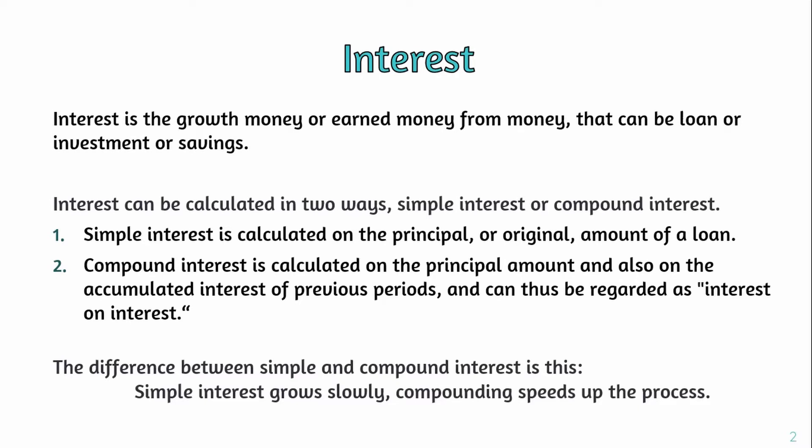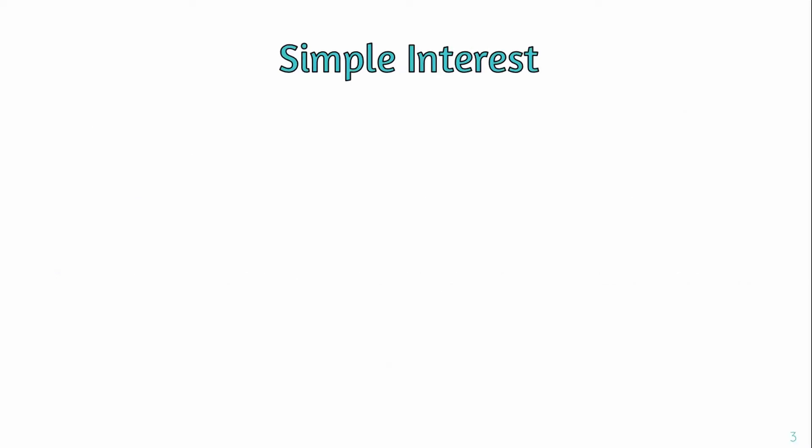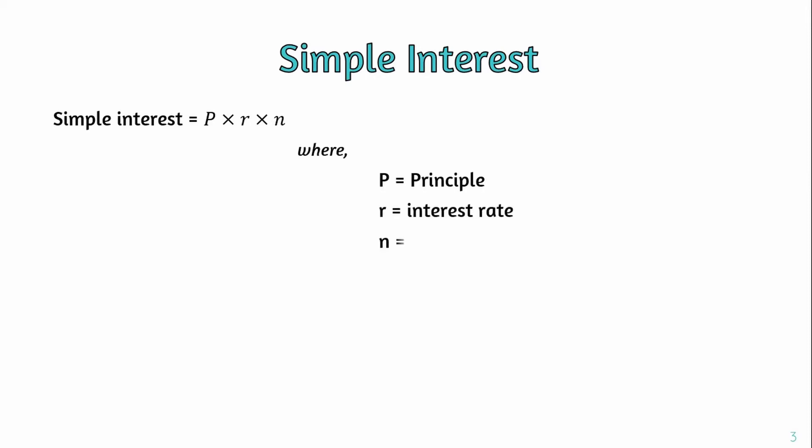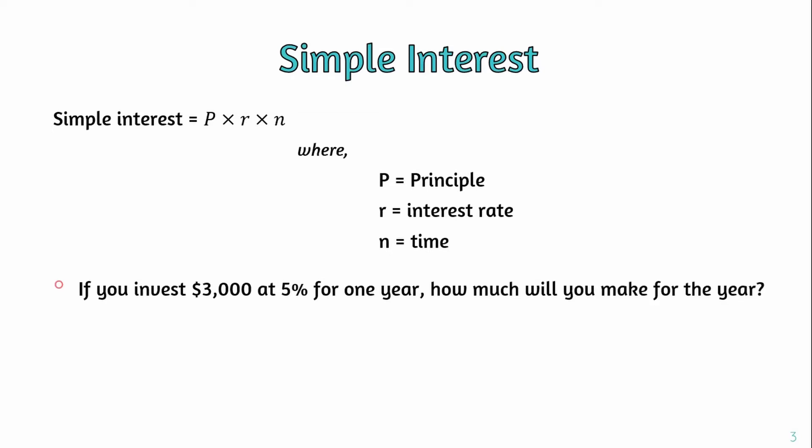So first, we will look at the simple interest formula. The simple interest formula is P times R times N, where P is the principal, R is the interest rate, and N is the time.